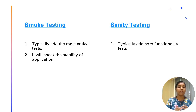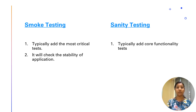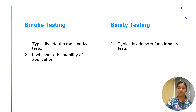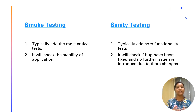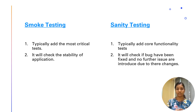The second point is: in smoke testing, we check the stability of the application. We report whether this build is stable or not stable. Once the build is stable, only then can we perform any other test cases after smoke testing. In sanity testing, we check if the fix has been applied or whether no further issues have been introduced due to the changes — there should be no impact on the existing functionality.